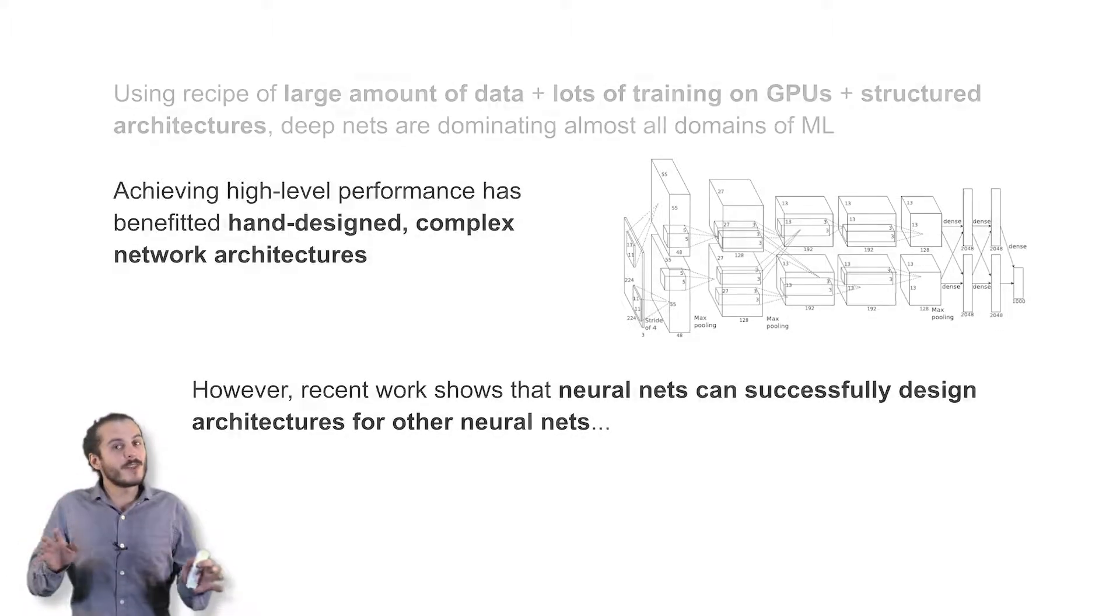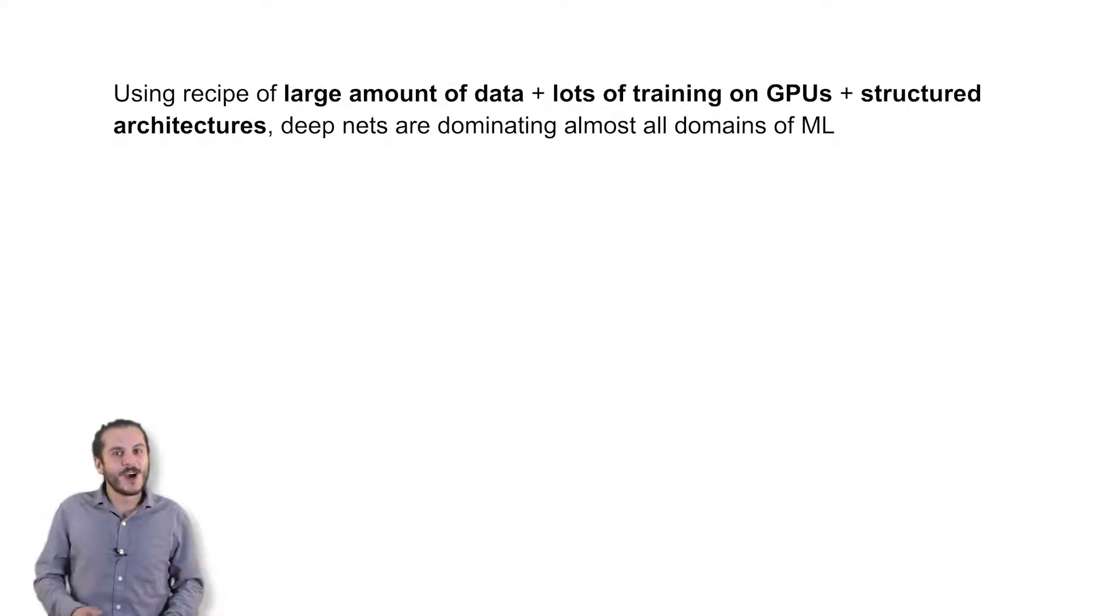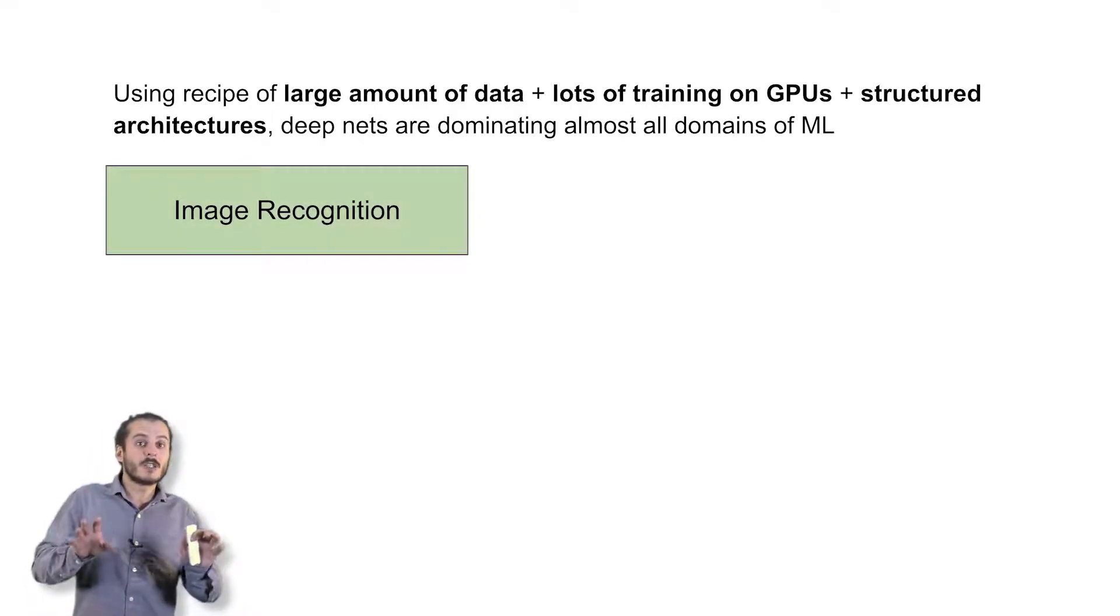Now given this recipe that I mentioned of large amounts of data, lots of computing power and training on graphics processors and structured architectures of the connectivity between neurons, deep networks are coming to dominate almost all domains of machine learning or at least many, many of them. We already talked about image recognition, classifying images according to the object inside of them.